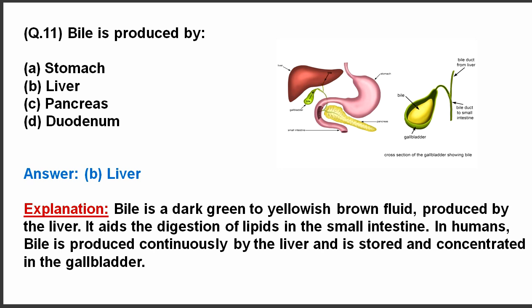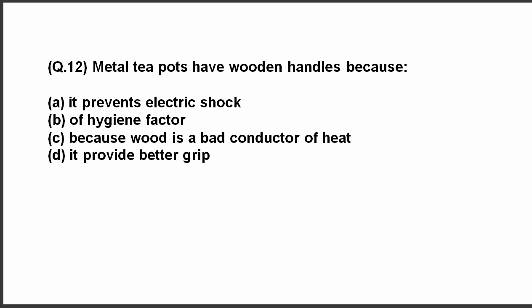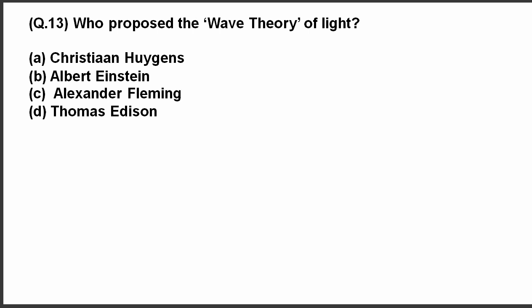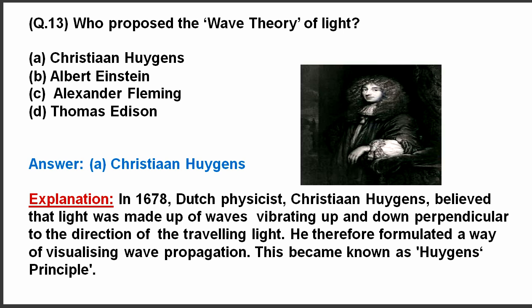Question number 11. Bile is produced by? Here are the options. The correct answer is liver. Question number 12. Metal teapots have wooden handles because? Have a look at the options. The correct answer is because wood is a bad conductor of heat. Question number 13. Who proposed the wave theory of light? Here are the options. The correct answer is Christian Huygens.